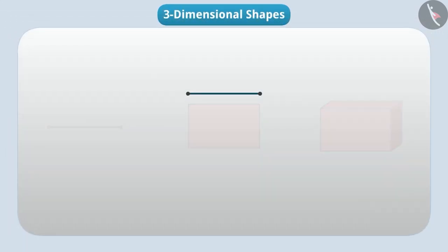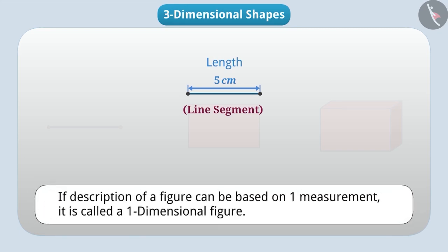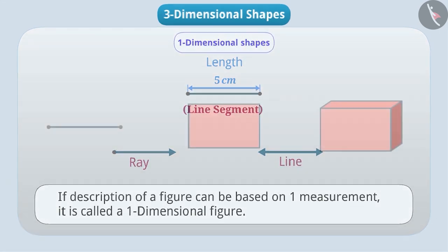There are three figures here. The first figure is a line segment whose length is 5 cm. Here we have described this line segment only on the basis of length, that is only on one measurement. In this way, if we can describe a figure on the basis of just one measurement, then we call it a one-dimensional figure. The ray, the line, is also a one-dimensional figure.